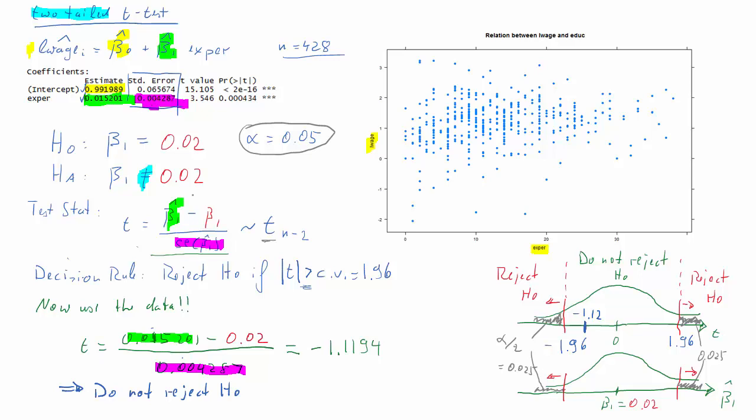That corresponded to saying that every additional year of experience on average gives you an additional two percent of wage. And we have to say that the data we have are consistent with this hypothesis. There is no evidence to reject this hypothesis.